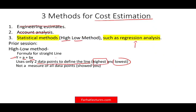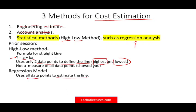Well, this is not a good measure. When we get the straight line formula y = a + bx, it works perfectly for the highest and lowest points, but it does not measure all the data properly. So what's the solution? The solution is to run a regression analysis where we analyze all the data points to estimate the line. Rather than just two data points, the regression will go through all of them.